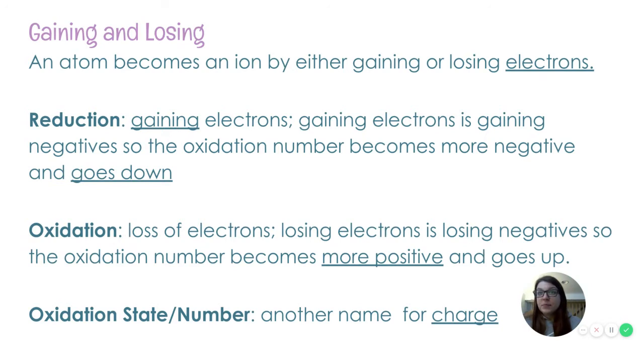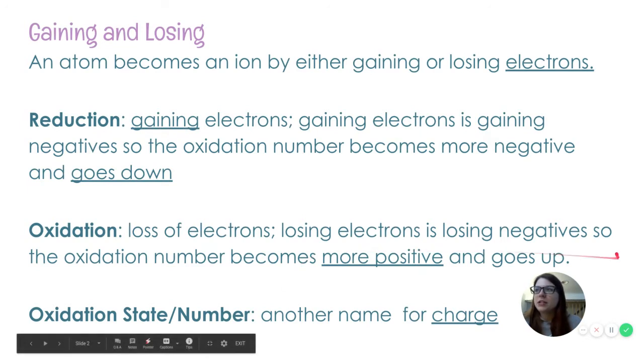Oxidation is the opposite. Oxidation is when you lose electrons and that is becoming more positive. And lastly, an oxidation state or an oxidation number. There's a fancy chemistry definition for that, which is kind of like tracking electron loss and gain. It's a fancy term for charge. Okay. That's all you need to know.